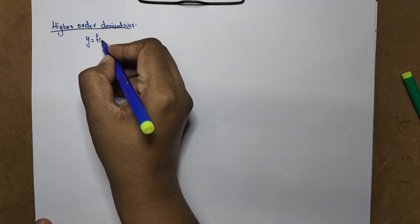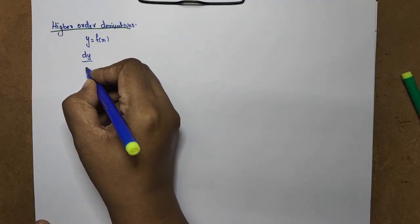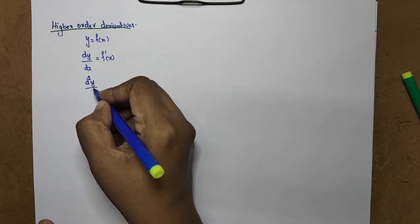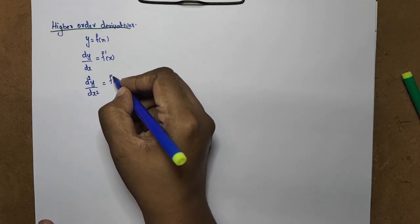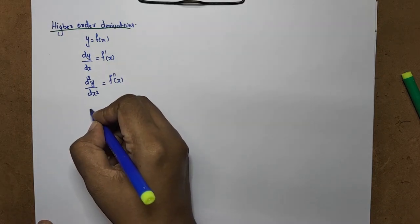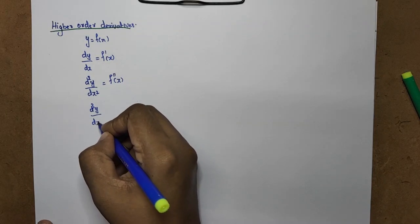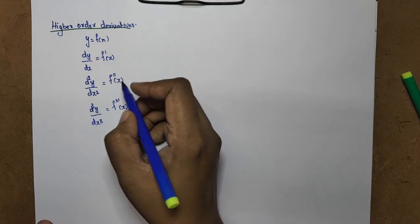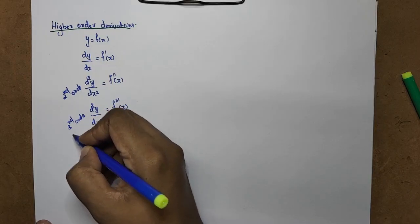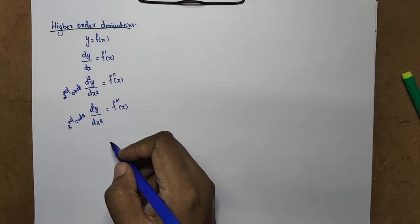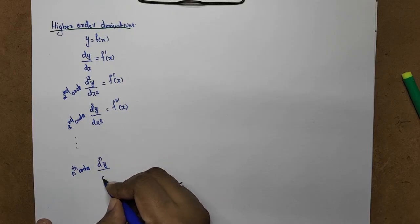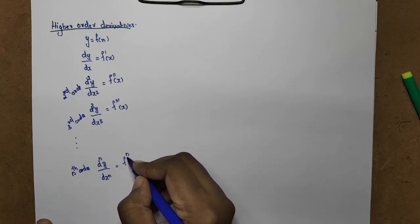If we have a function y equal to f of x, f'(x) is the first derivative, that is dy by dx. The second derivative is d²y by dx², written as f''(x). The third derivative is d³y by dx³, that is f'''(x). The nth order derivative is d^n y by dx^n, written as f^(n)(x).